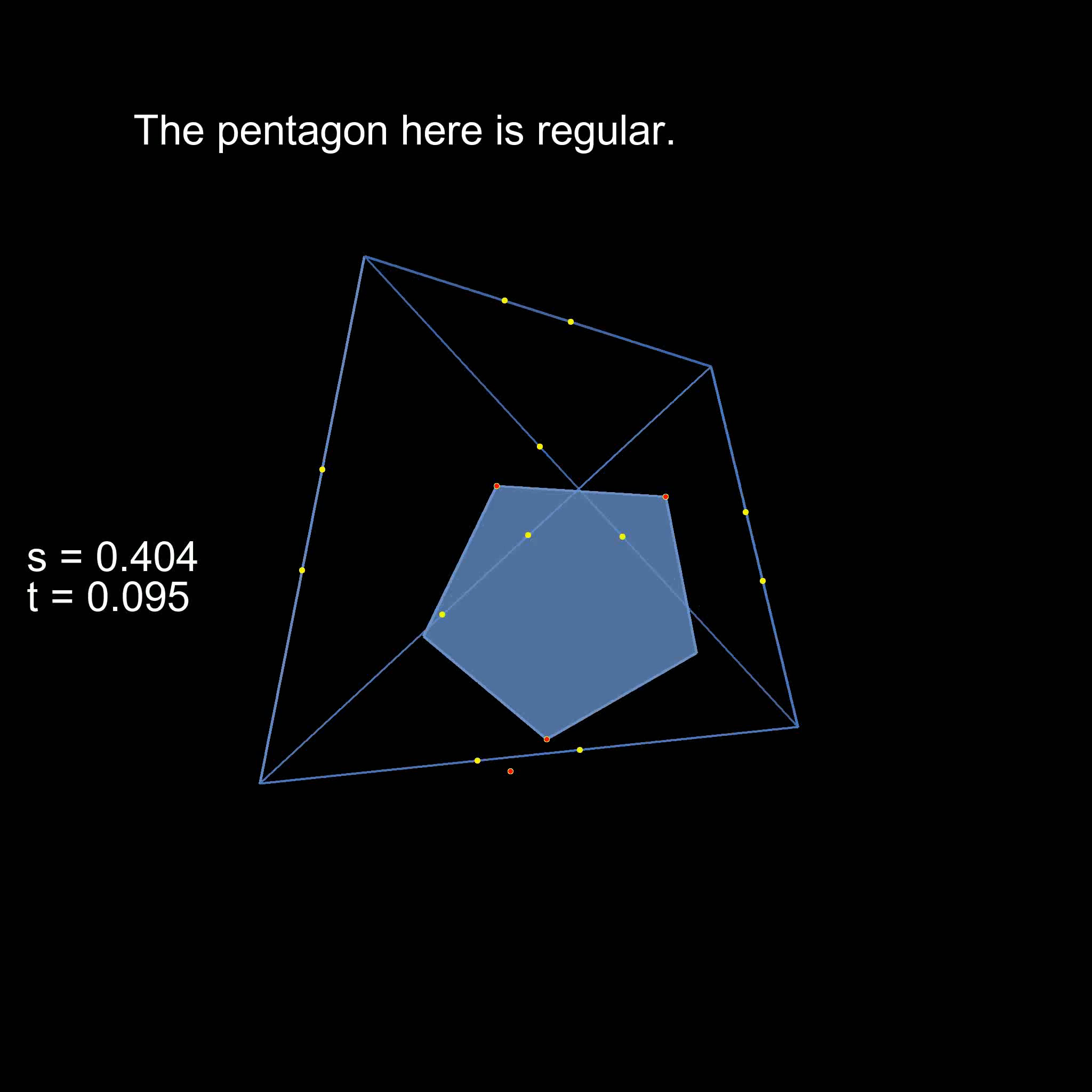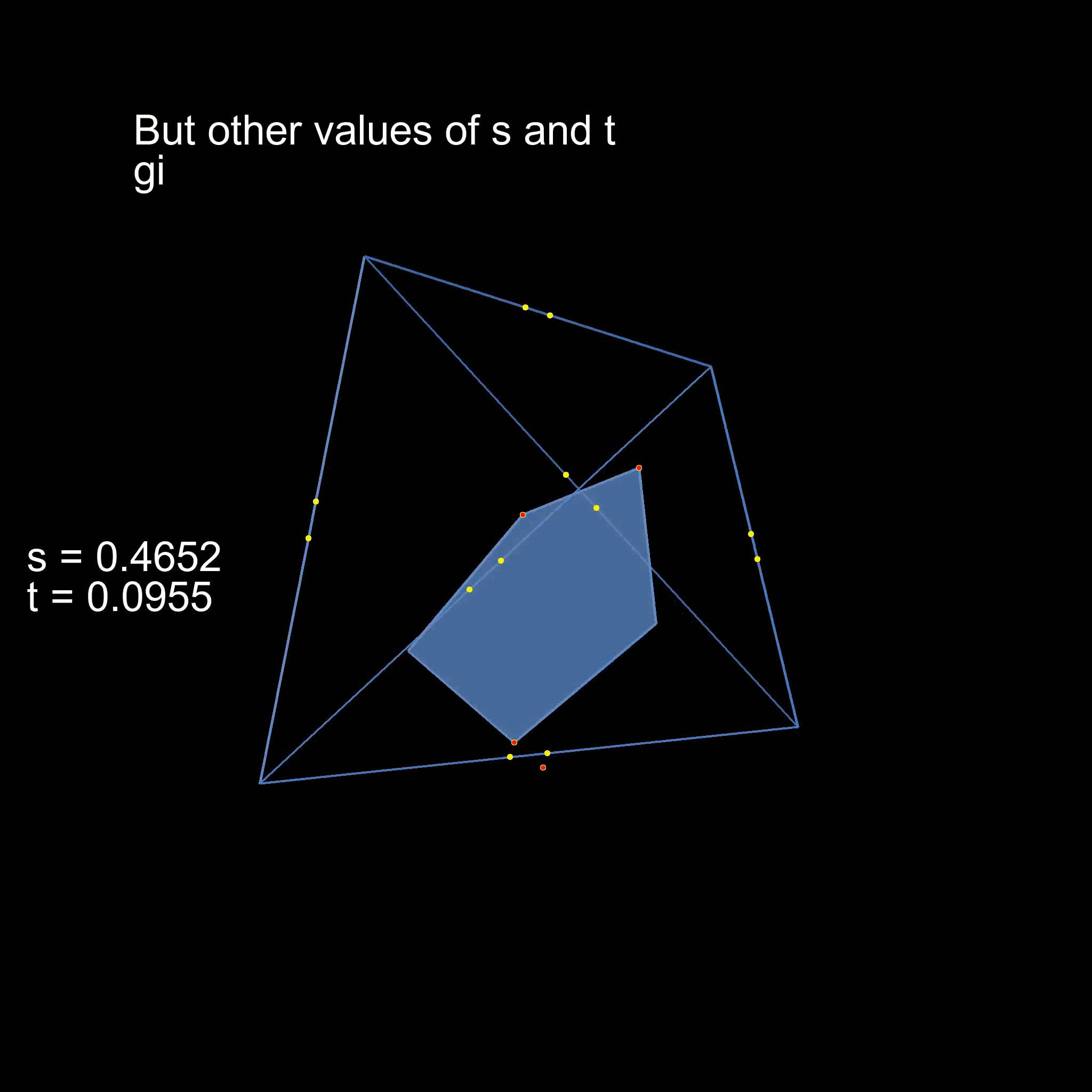Now this pentagon happens to be regular. But if we change the values of s and t, we can get all kinds of other pentagons as well.